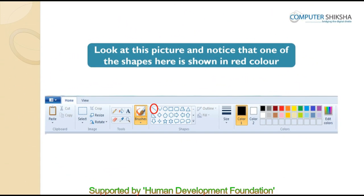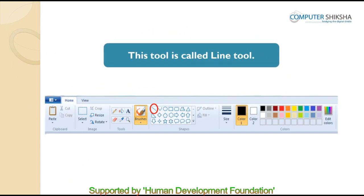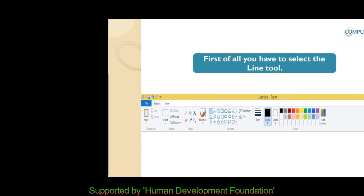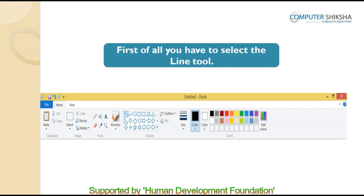Look at this picture and notice that one of the shapes here is shown in red color. This tool is called the line tool. Using MS Paint, if you want to draw a line, you will use the line tool. Let us see why and how we need to use the line tool. In order to use the line tool, first of all you have to select it. Remember that once you select the line tool, you will be able to only draw lines in your drawing space.